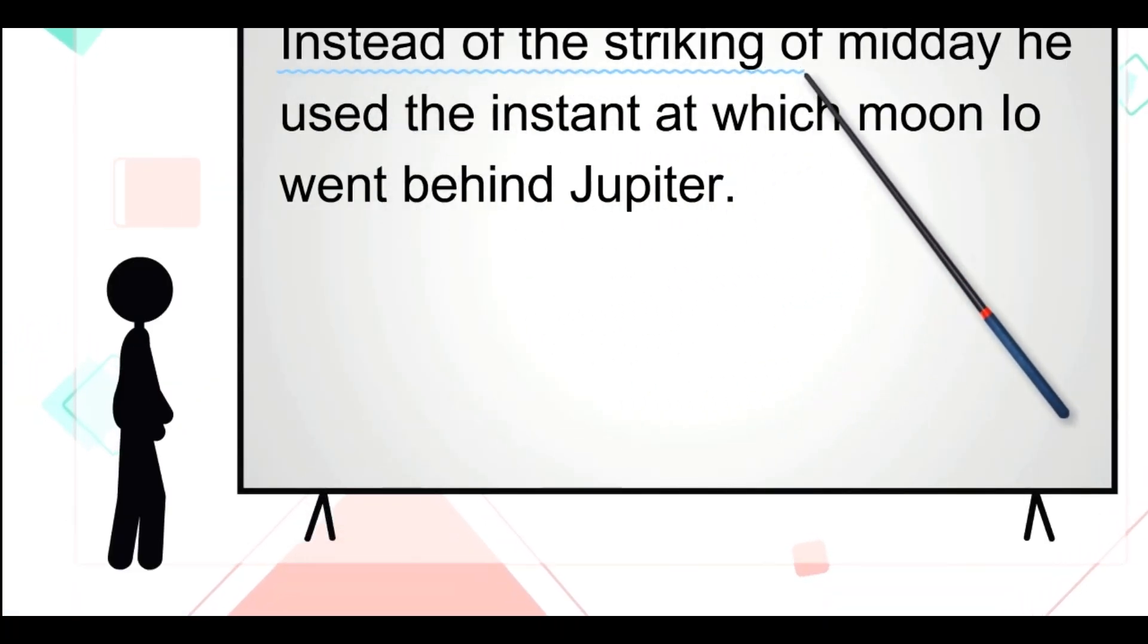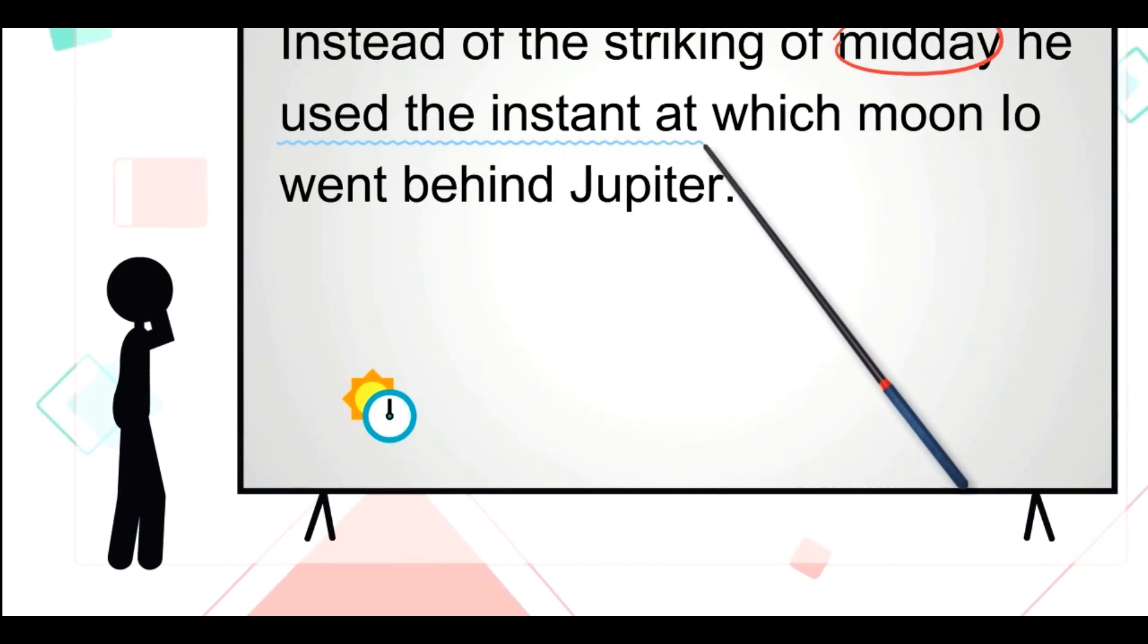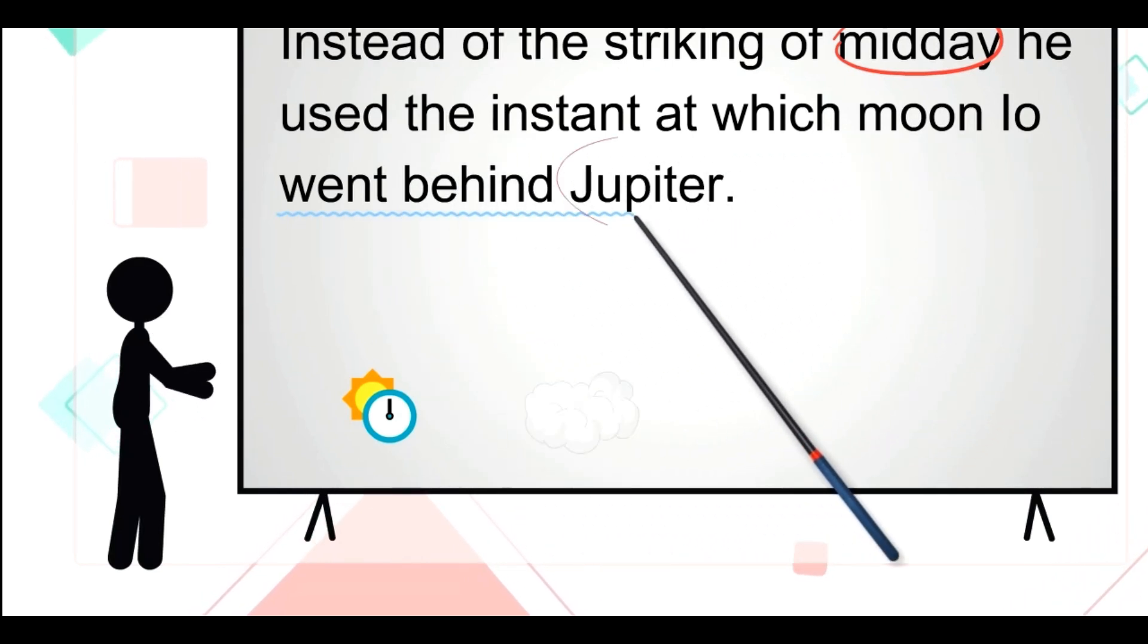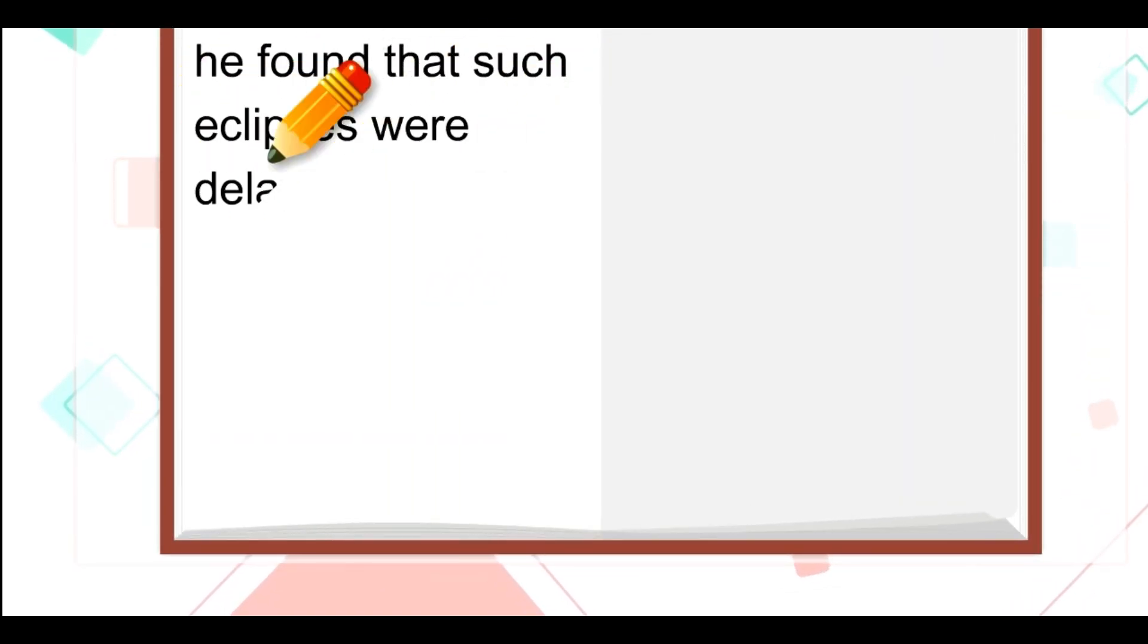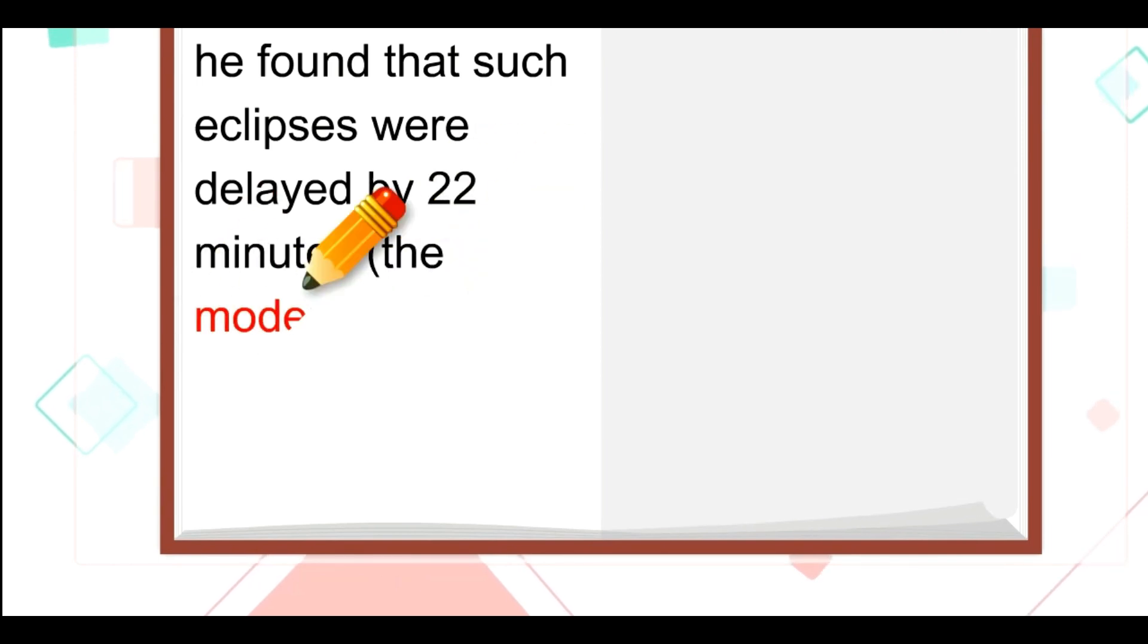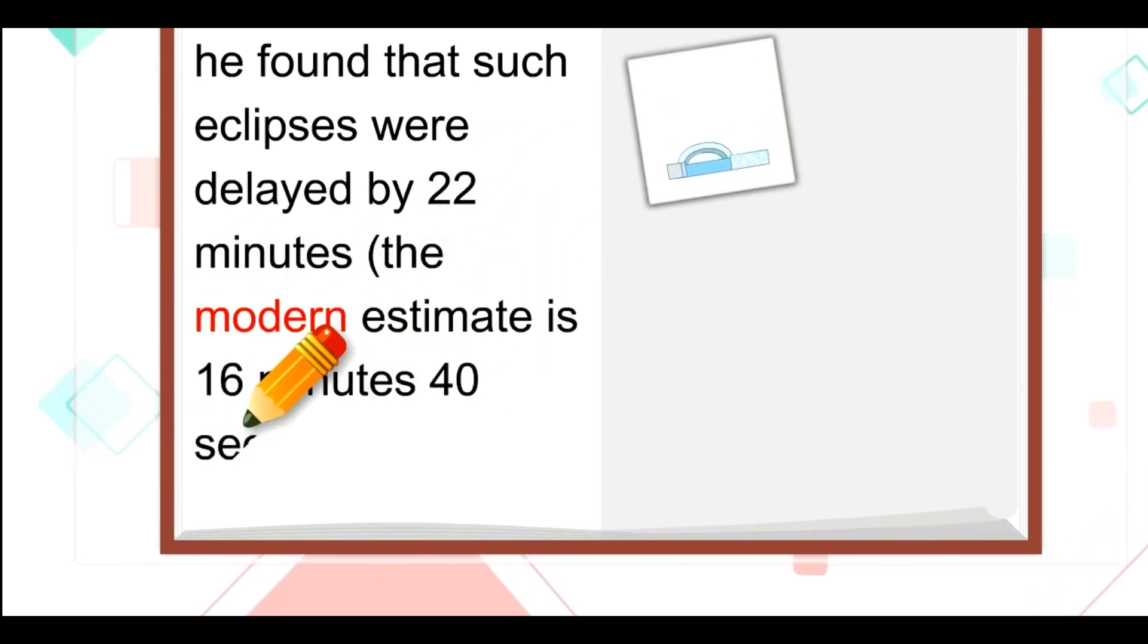Instead of the striking of midday, he used the instant at which moon Io went behind Jupiter. In 1676, he found that such eclipses were delayed by 22 minutes. The modern estimate is 16 minutes 40 seconds.